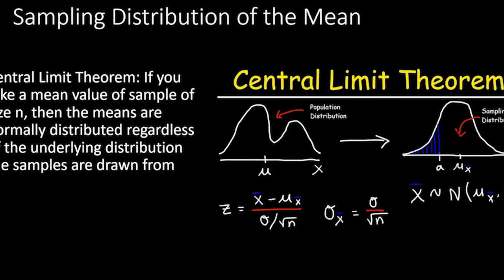The central limit theorem is one of the foundations of statistics. It states that if you take the mean of a sample of any size n, the distribution of those sample means is normally distributed regardless of the underlying distribution the samples are drawn from. This is why the normal distribution comes into statistics so often.